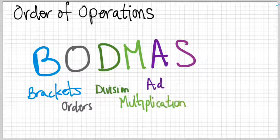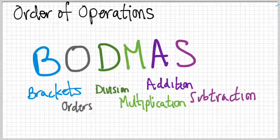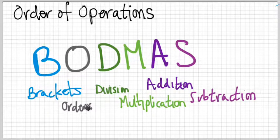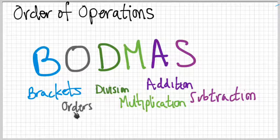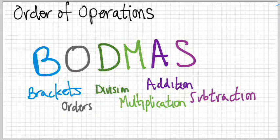In Australia, I don't know about other countries besides the states, but in Australia, B is for brackets. And in America, that would be P for parentheses. O is orders. Sometimes people say 'of.' I don't know why either of those words are used. In America, it's E for exponents, which I think is probably the most appropriate letter, but that's okay.